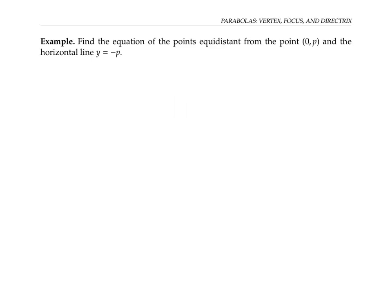I want to start by finding the equation of all points that are equidistant — the same distance from a point (0, p) on the y-axis and the horizontal line y equals negative p. I'm assuming here that p is positive for starters.